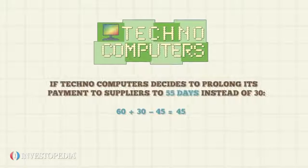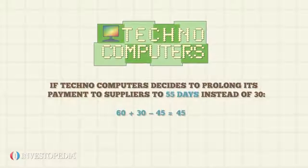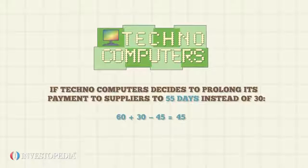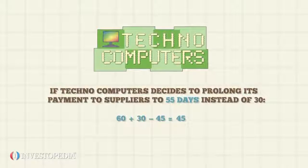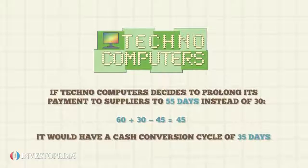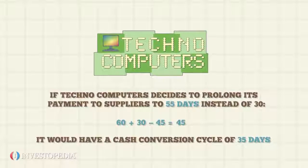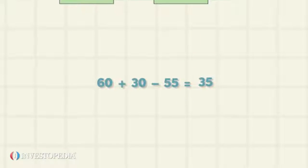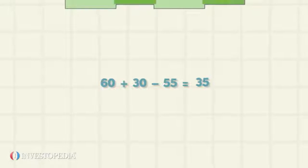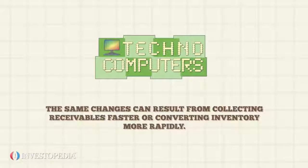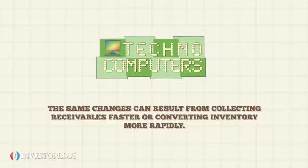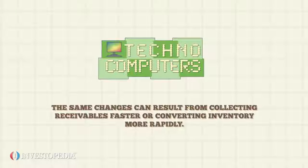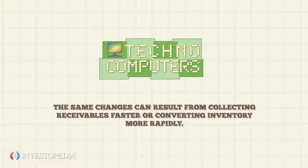If Techno Computers decides to prolong its payment to suppliers to 55 days instead of 45, it would have a cash conversion cycle of 35 days: 60 plus 30 minus 55. The same changes can result from collecting receivables faster or converting inventory more rapidly.